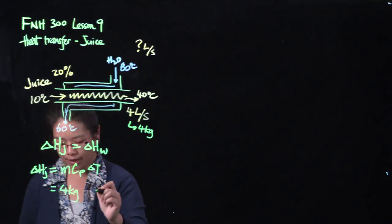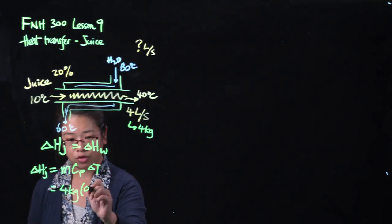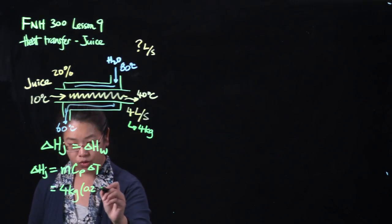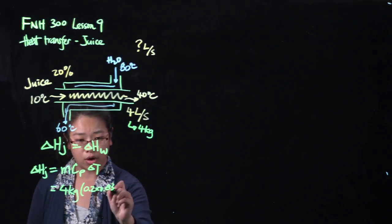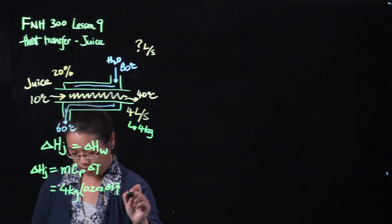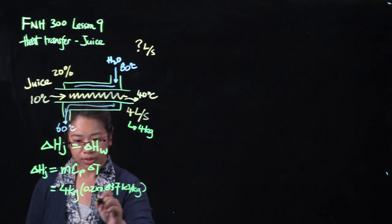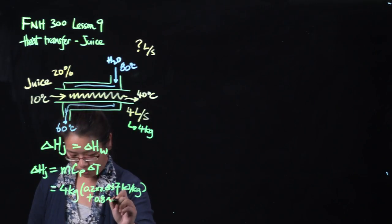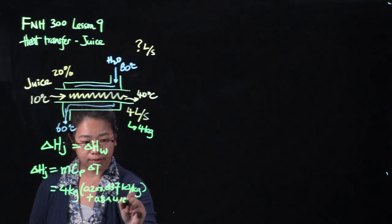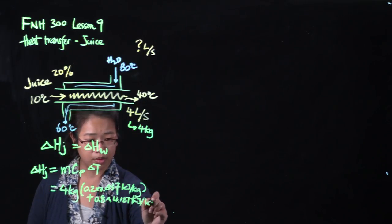Heat capacity, as we've learned earlier in the lesson, we have this equation: it's 20% solid, so 0.2 times 0.837 kilojoules per kilogram, and then plus 80% water. So it's 0.8 times 4.187 kilojoules per kilogram.